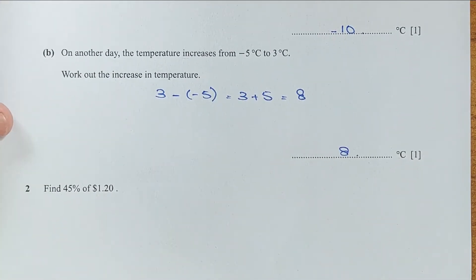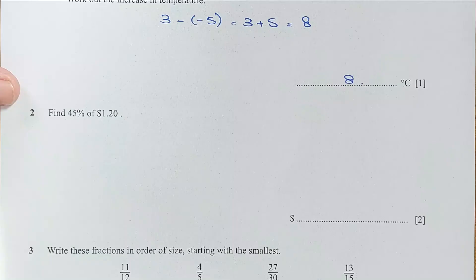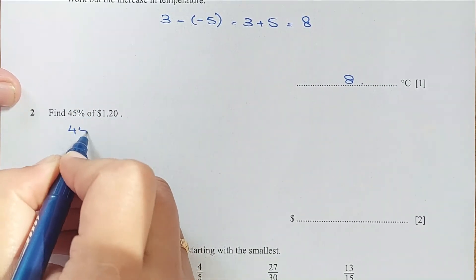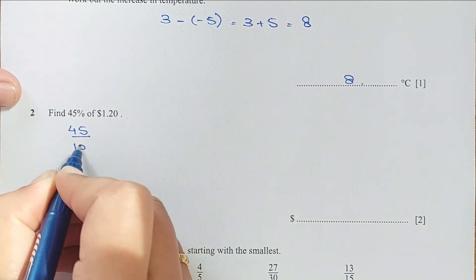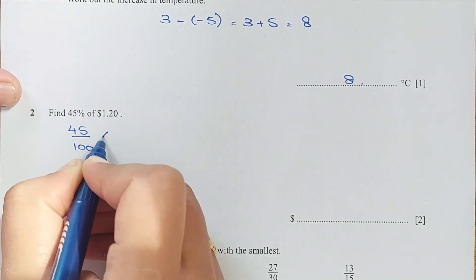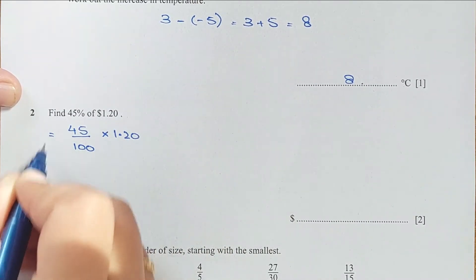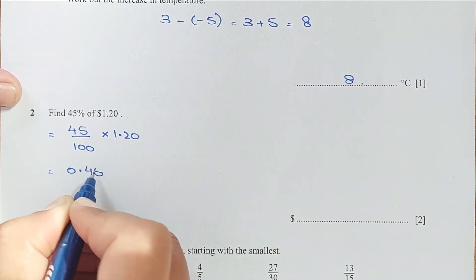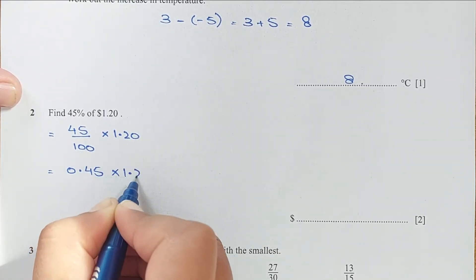Now for question number 2. Find 45% of 1.20. So 45% is 45 over 100 times 1.20, and this is 0.45 times 1.20.